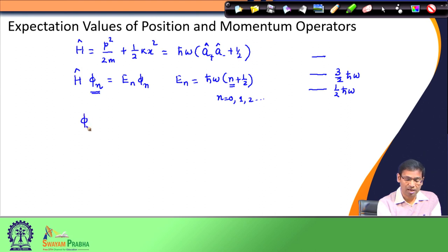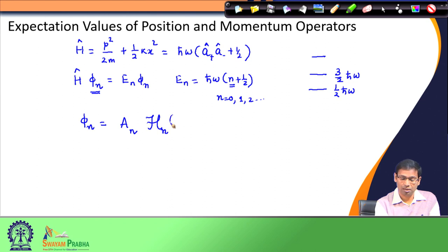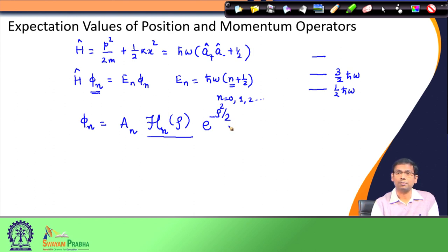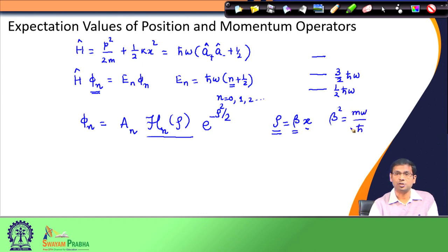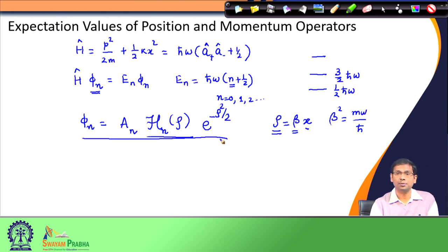The eigenfunctions phi-n had a general formula which included a normalization constant A_n, a Hermite polynomial expressed in the dimensionless coordinate rho — where the order of the Hermite polynomial is given by the index n — and the third part is a Gaussian function e to the power minus rho-squared over 2. We defined rho as the dimensionless coordinate, simply beta times x, where beta is defined such that beta-squared equals m-omega divided by h-bar. Here m is the mass of the oscillator, omega is its angular frequency, and h-bar is Planck's constant divided by 2-pi.